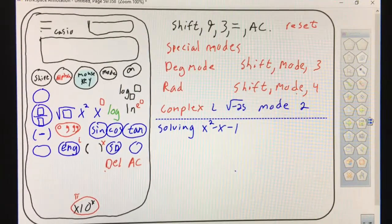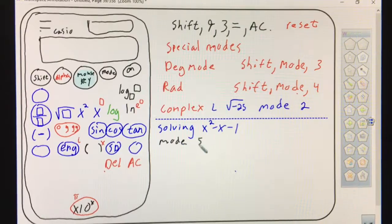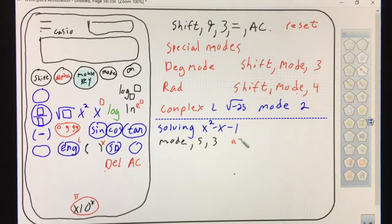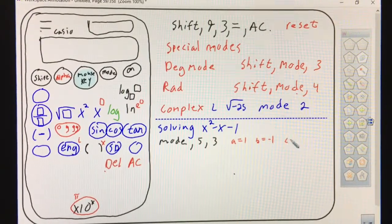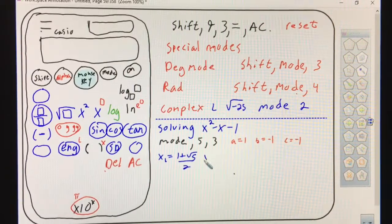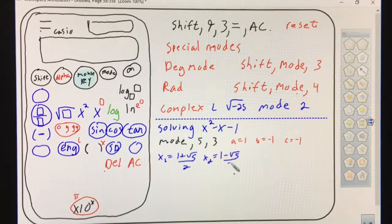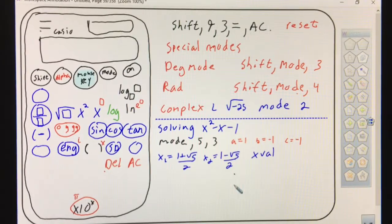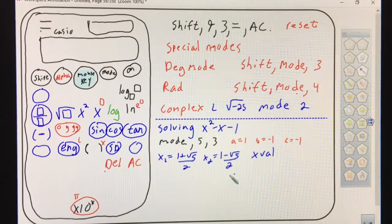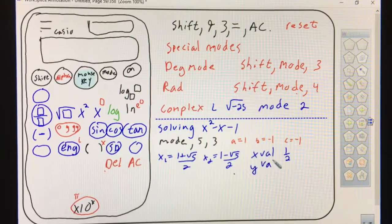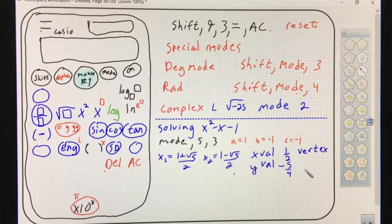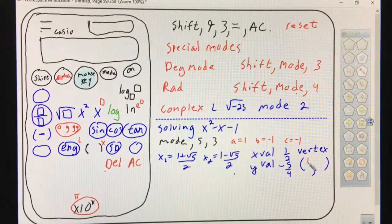To solve an x squared, that's the big one we always use. Mode five, three. A equals one, B equals negative one, C equals negative one. Your first x intercept would be one plus square root of five over two. Your second x sub two would be one minus square root of five over two. Then your x value and y value - those two numbers represent your vertex. There are going to be a couple problems on every test where I ask you to find the vertex. You can just use mode five three and know which one's which.